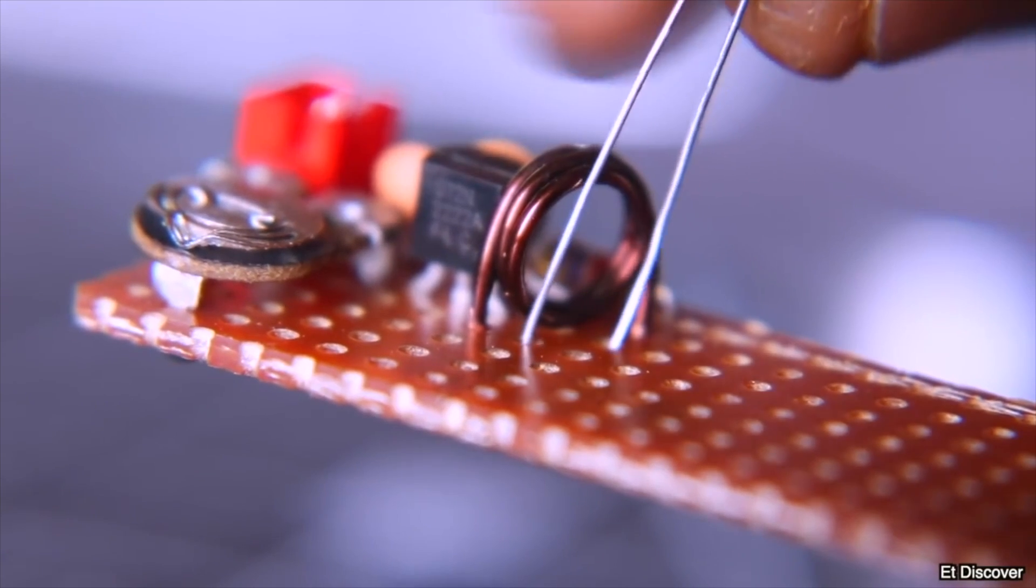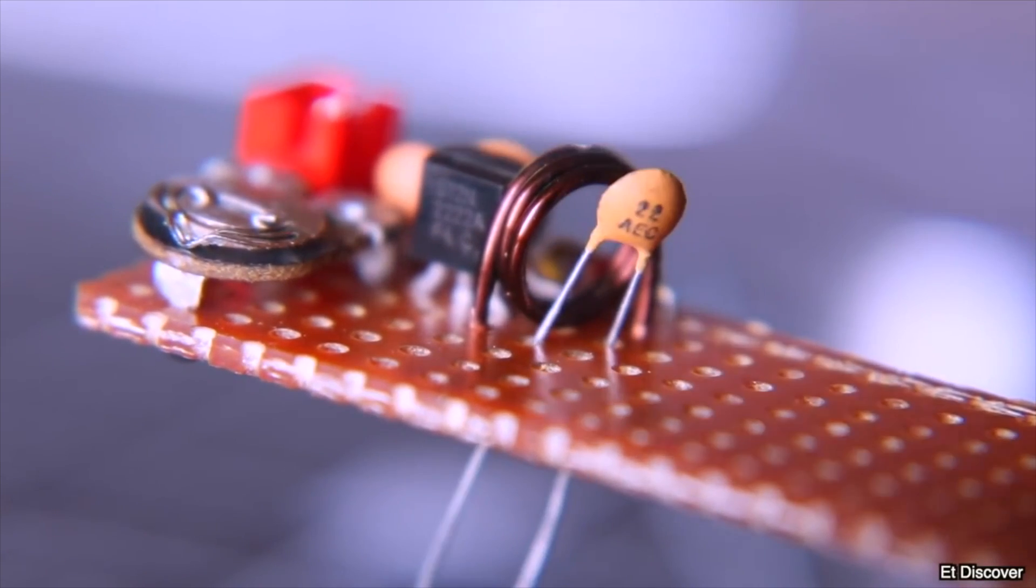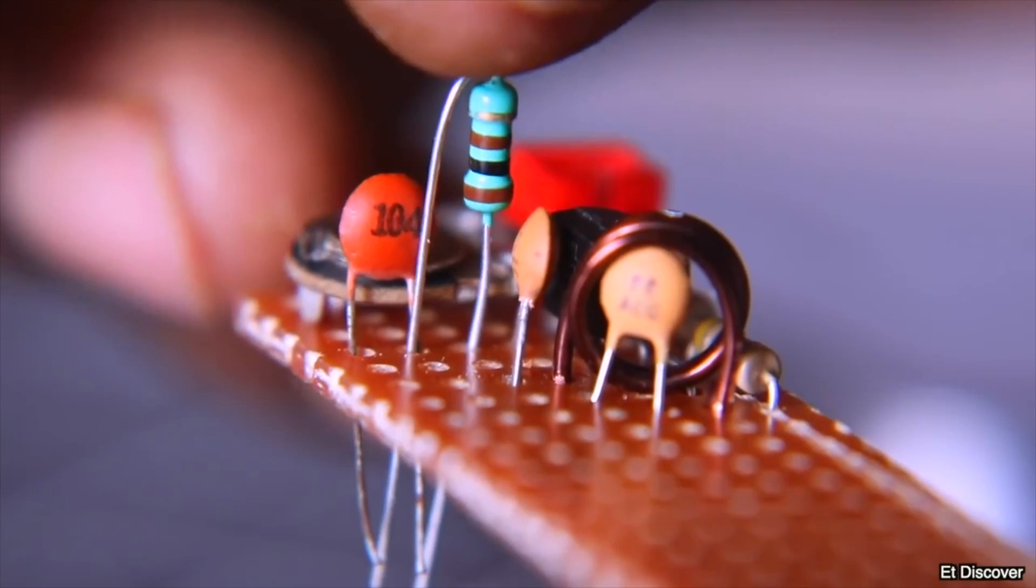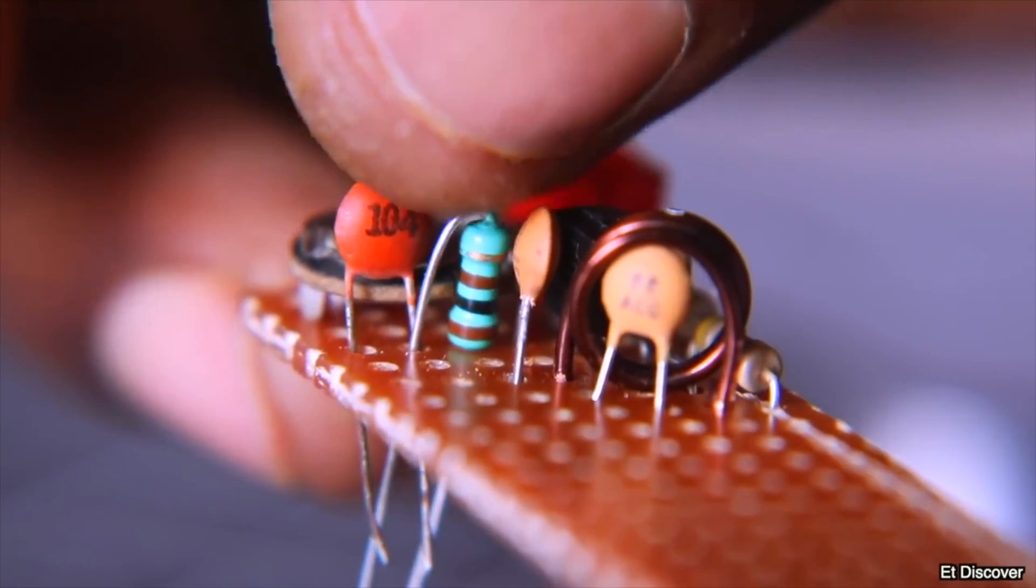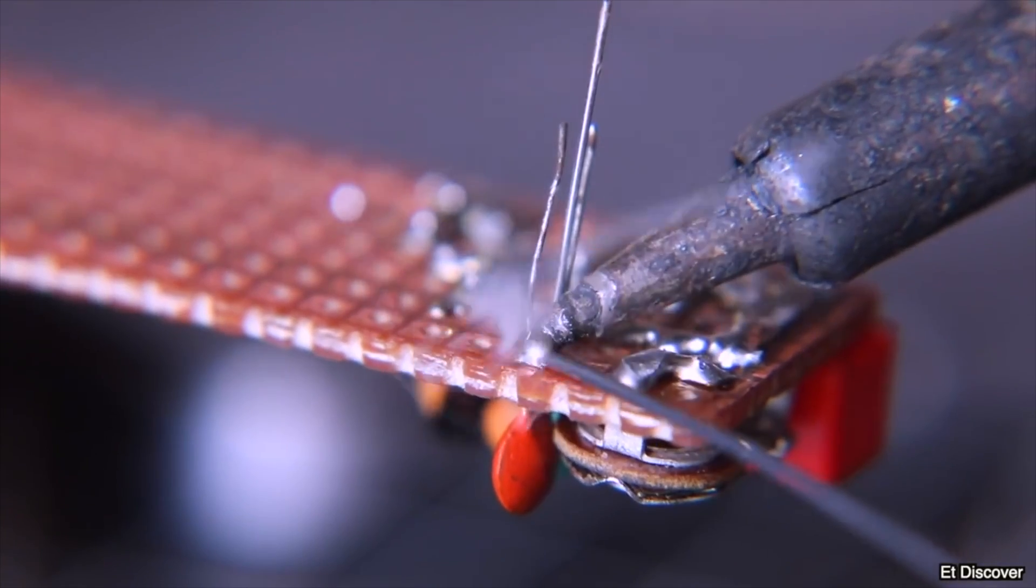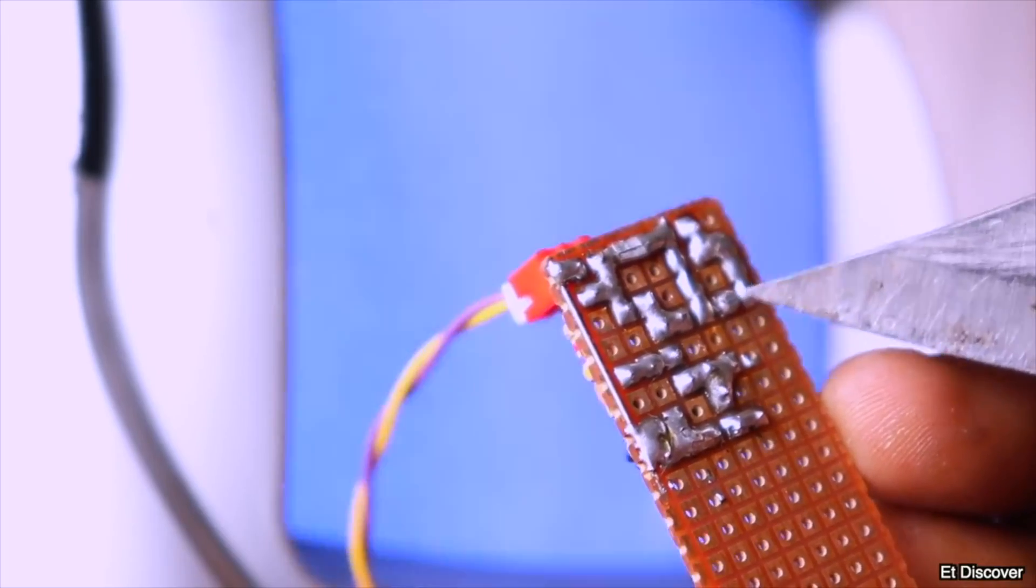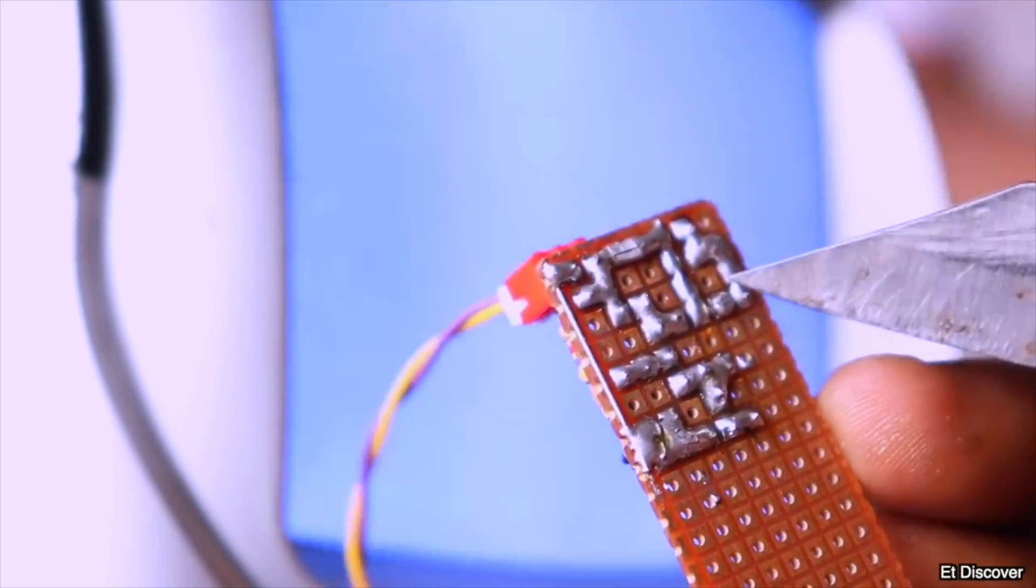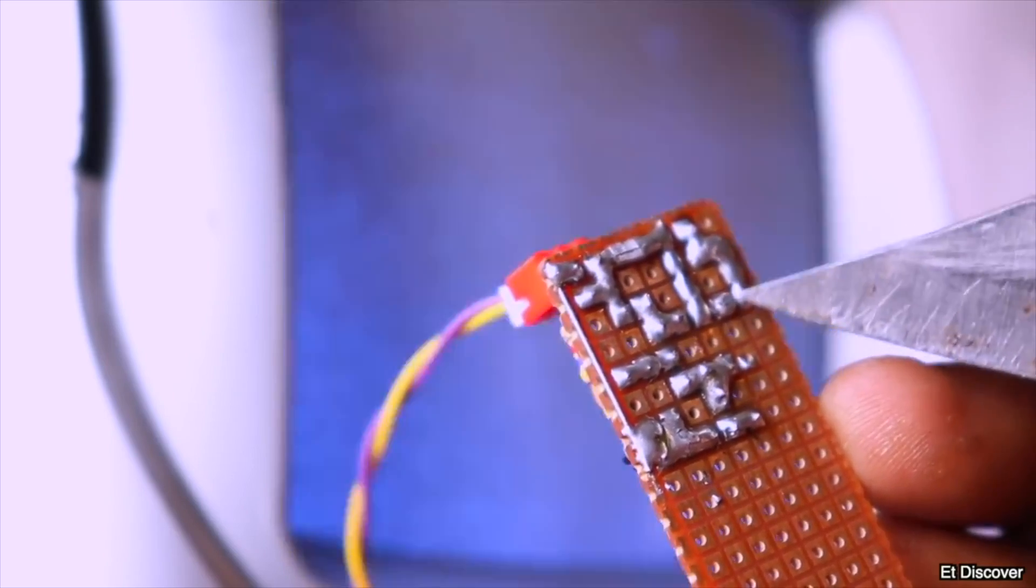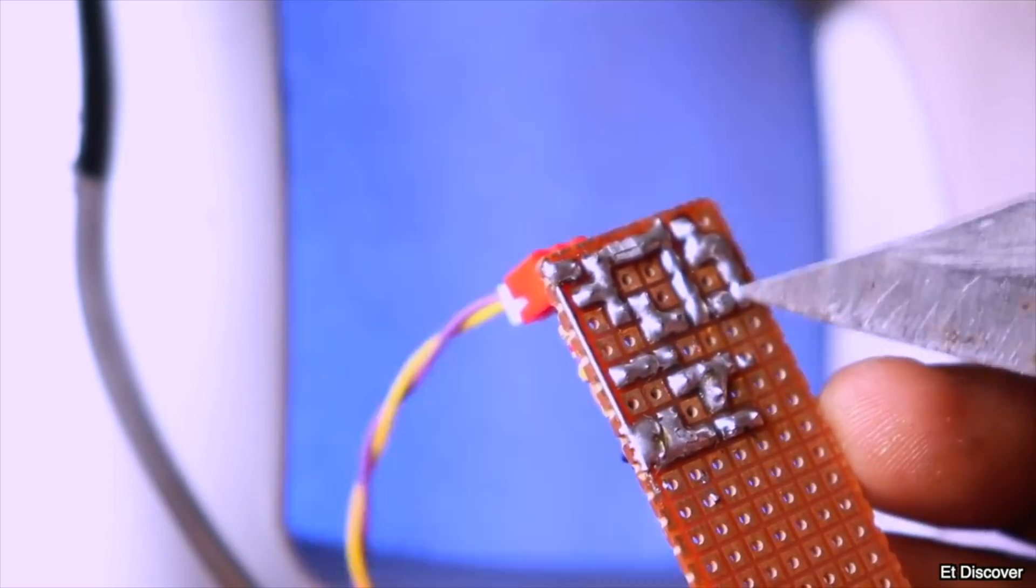Then I connected the 22PF capacitor to the coil to complete the LC circuit. Our circuit is completed. Now is the time to check that it is working properly or not. The video is being transmitted correctly here. Now we just need a video signal for this input signal.